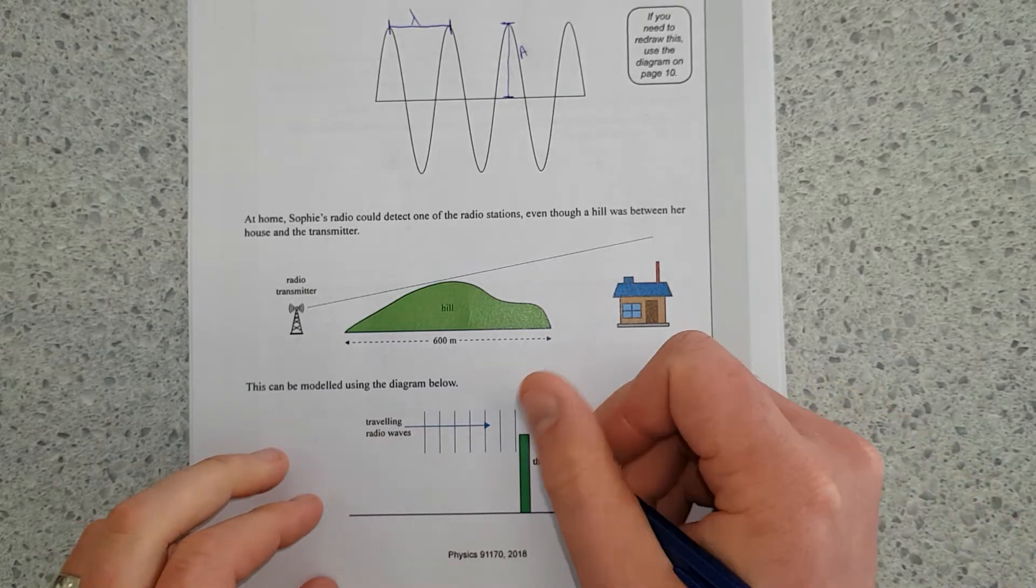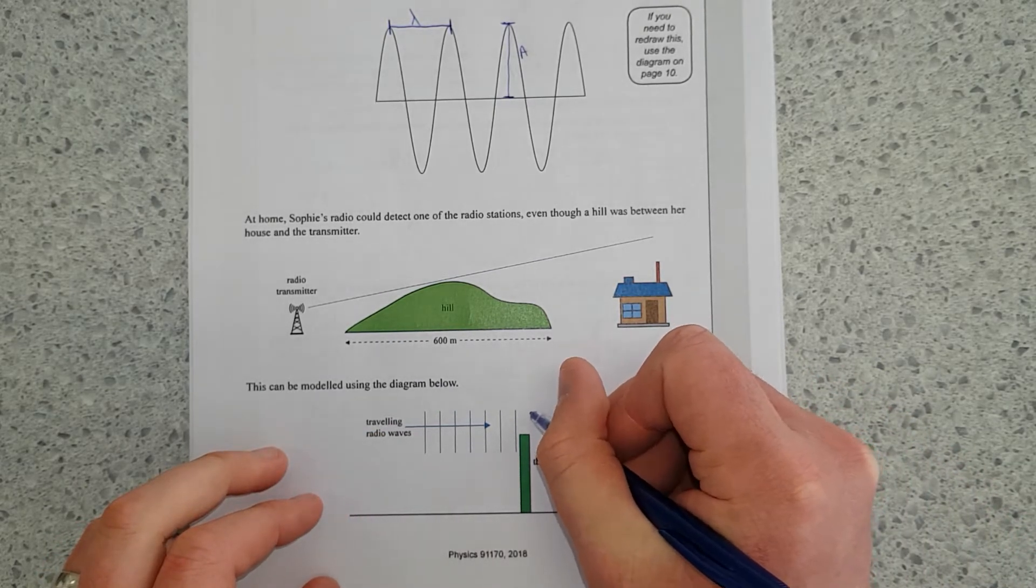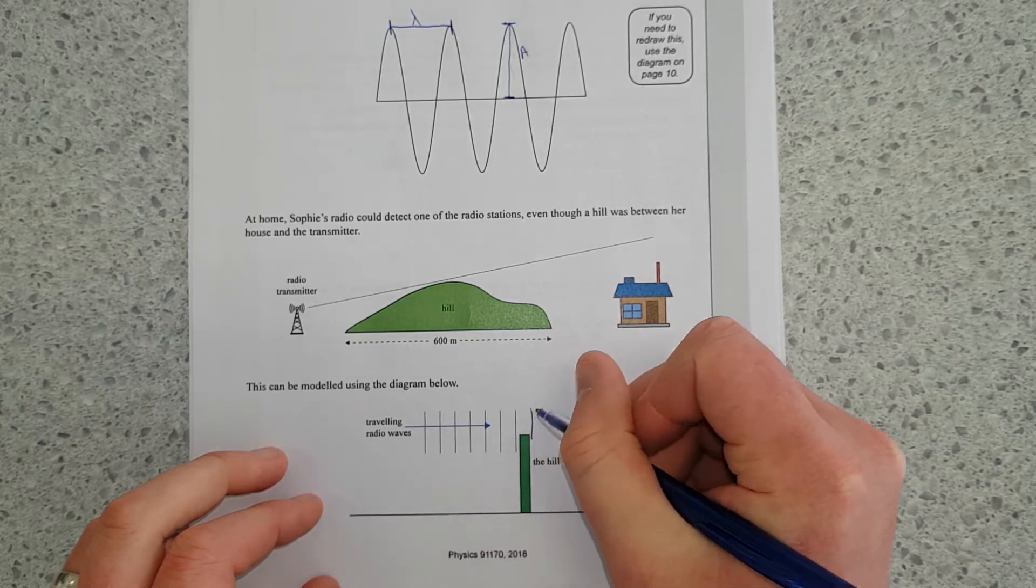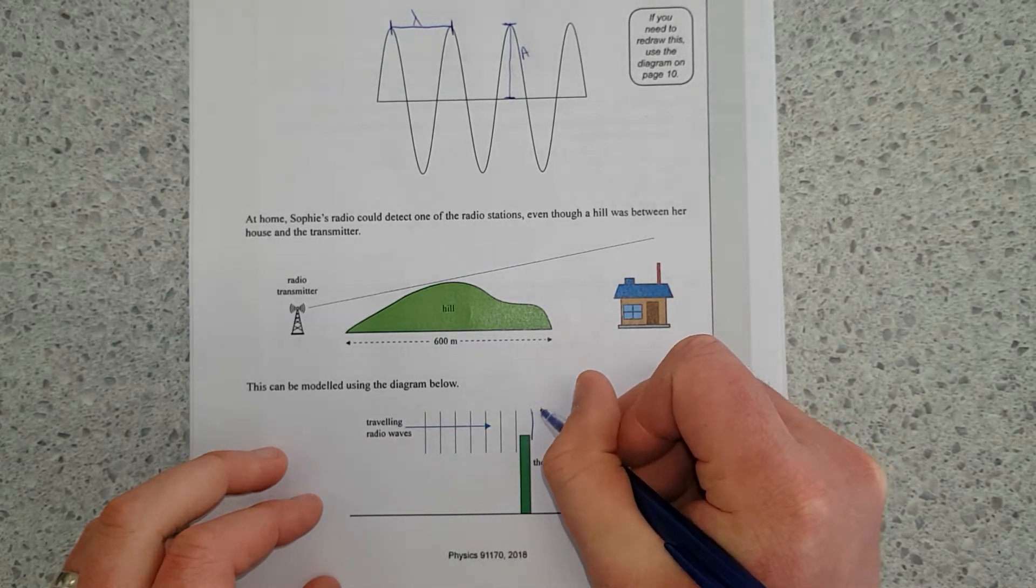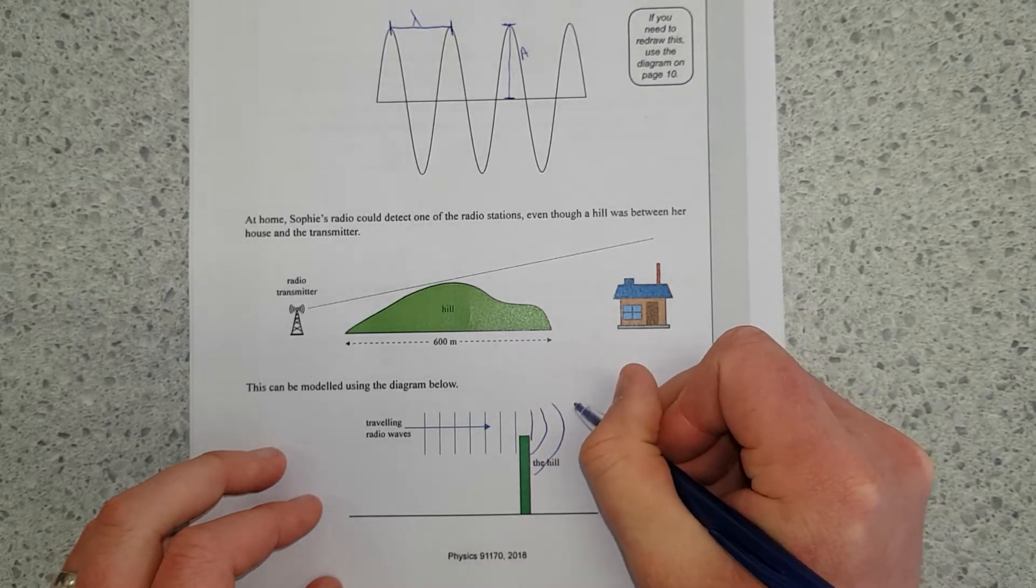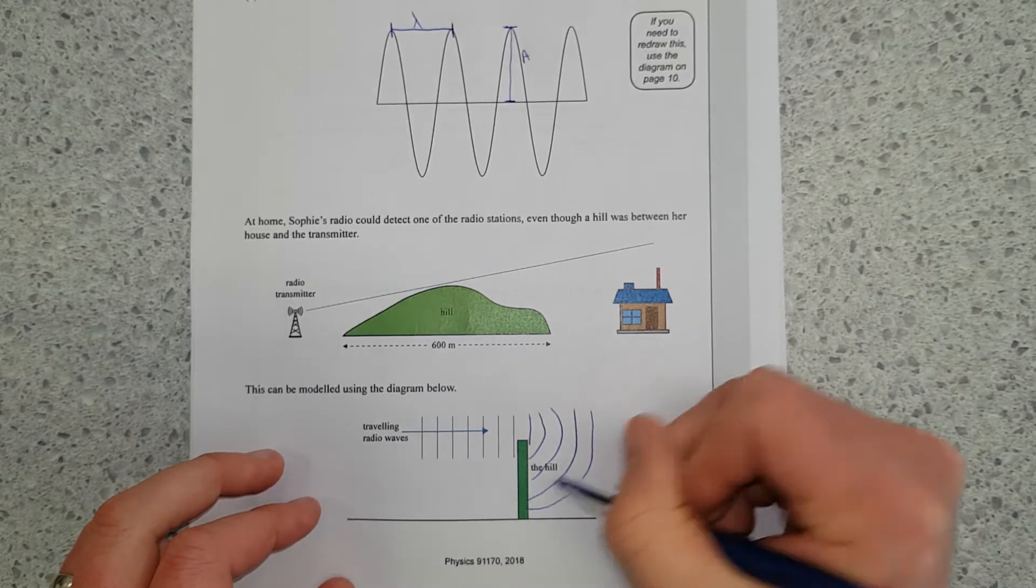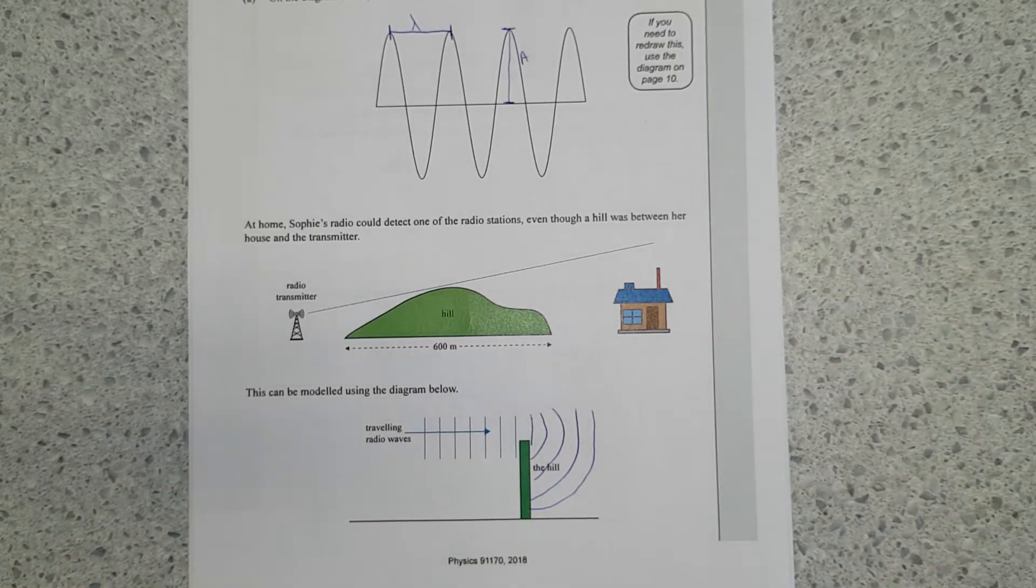Assuming these wavelengths are kind of large, what ends up happening is you sort of get these radio waves that go to here, and then you get this sort of diffraction pattern like that. It kind of looks like that-ish. A bit messy, but yeah, so that's called diffraction.